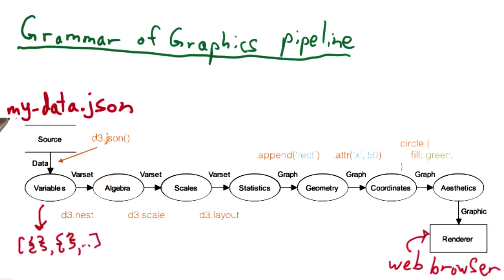Going from a JSON source file, in this case myData.json, into what the grammar of graphics calls variables, is implemented by D3's data loading functions, specifically D3.json if loading a JSON file.